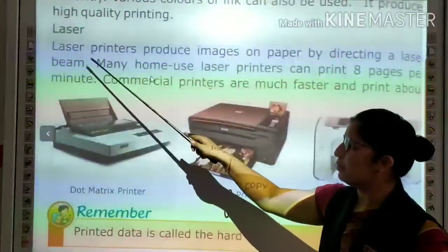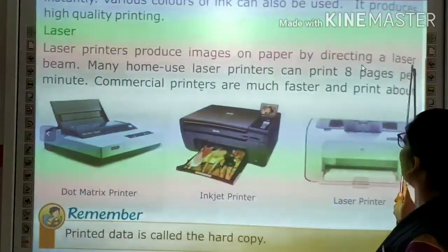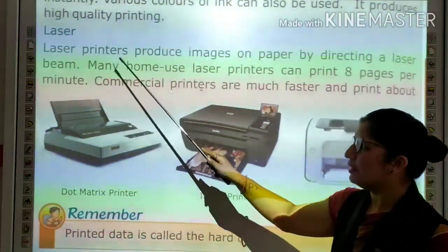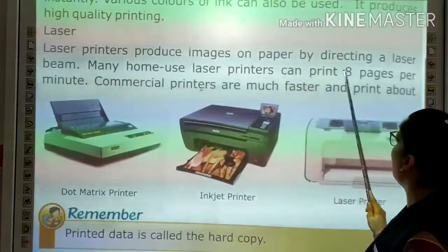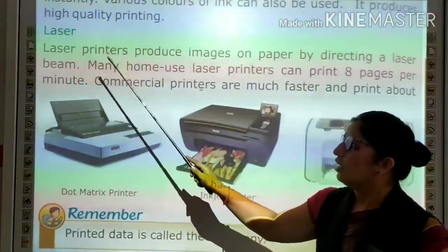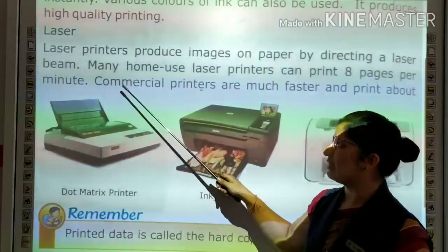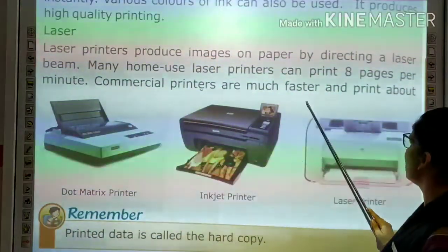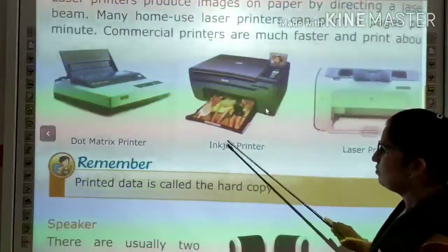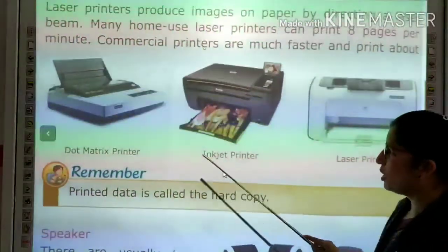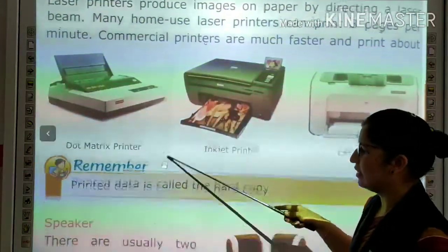The third type is the laser printer. The laser printer produces images on paper by directing a laser beam. Many home-use laser printers can print about 8 pages per minute. Commercial printers are much faster.